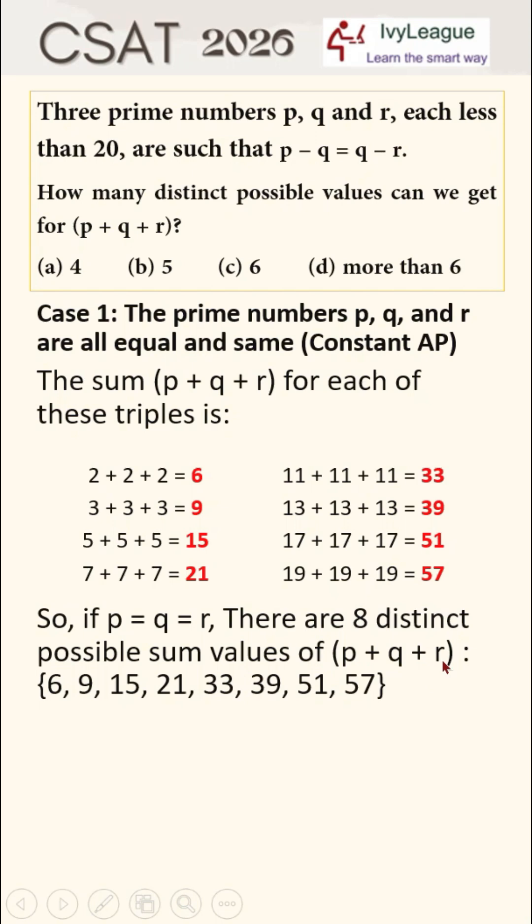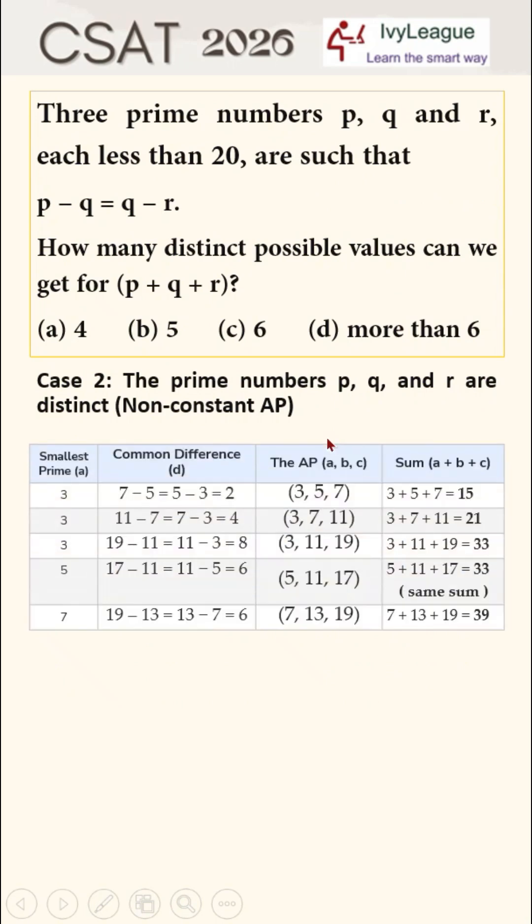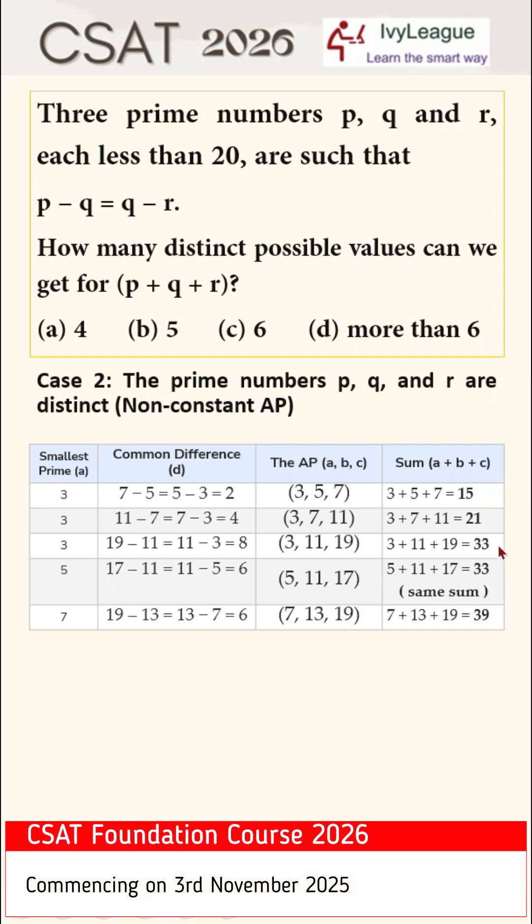Case number two: where the prime numbers p, q, and r are distinct, and this becomes a case of non-constant AP. Now you can see that 7 minus 5 is equal to 5 minus 3, 11 minus 7 is equal to 7 minus 3, 19 minus 11 is equal to 11 minus 3, 17 minus 11 is equal to 11 minus 5, 19 minus 13 is equal to 13 minus 7. So we end up getting 1, 2, 3, and 4 values here: 15, 21, 33, and 39.